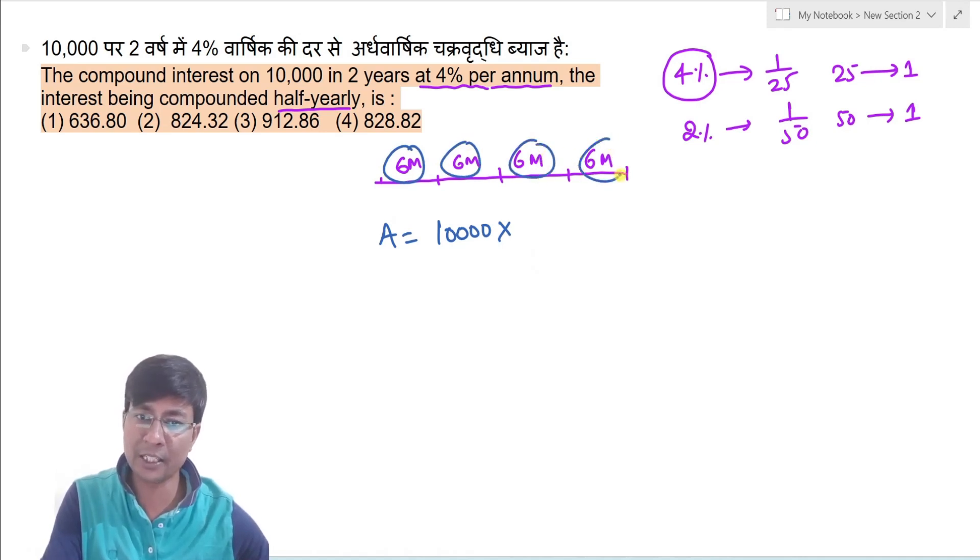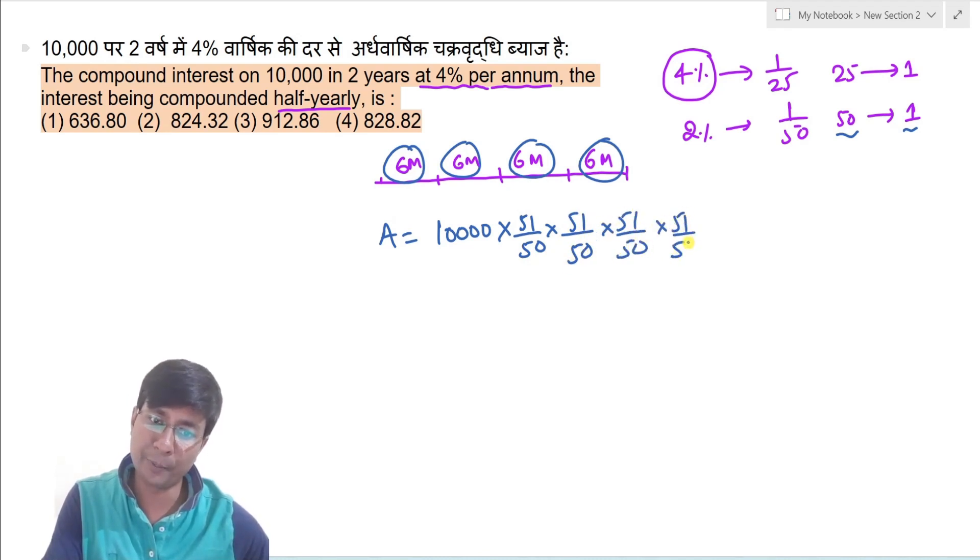Six month ka liye aur 50 rupaye ka value 1 rupaye se badha ke 51 ho jayega. Toh hum kya likhenge, 51 by 50 into 51 by 50 into 51 upon 50 into 51 upon 50, ye four times hoga. Ye four times hoga.